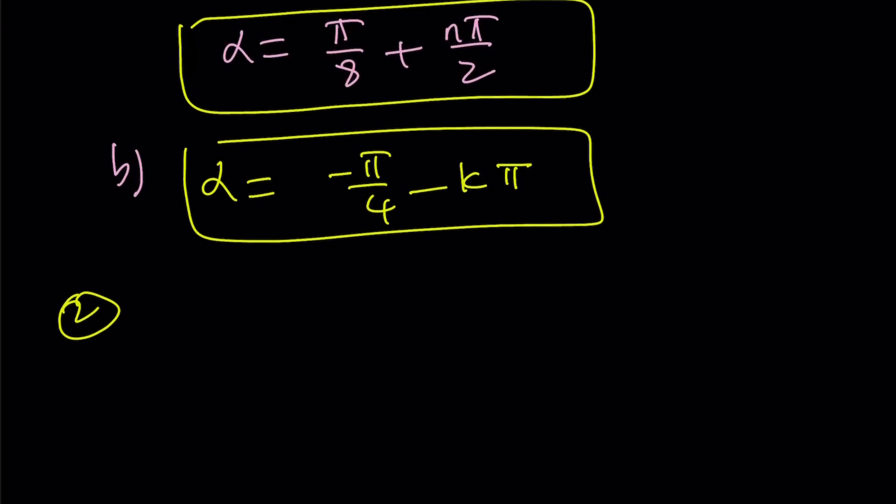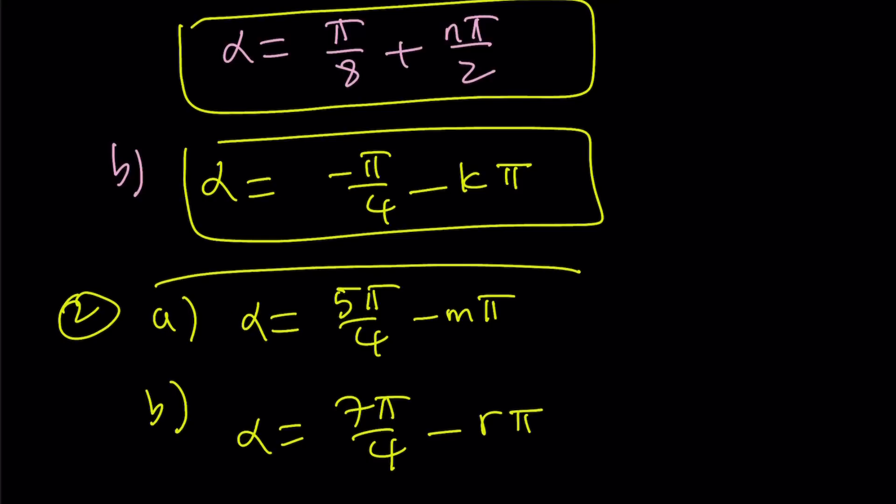And for the 2a, we're going to get alpha equals 5 pi over 4 minus n pi, and for the b, we're going to get alpha equals 7 pi over 4 minus r pi where r and m are integers. So,